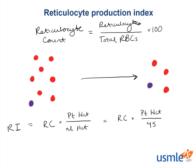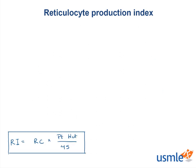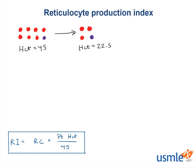Let's apply this with two examples. Our patient dropped from a hemoglobin of 14 and hematocrit of 45 down to a hemoglobin of 7 and hematocrit of 22.5. His reticulocyte count is 2% — it jumped from 1% to 2%, but that's an unreliable number because it doesn't account for how diluted the blood is. So the reticulocyte index = 2% × (22.5 / 45) = 1%. In other words, his corrected reticulocyte count is 1%.